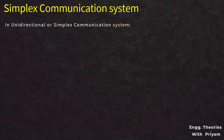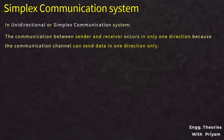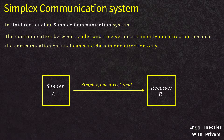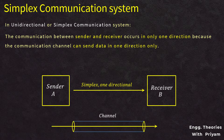In the simplex or unidirectional communication system, communication between the sender and receiver occurs only in one direction, because the communication channel can send data in one direction only — either from sender to receiver or receiver to sender. One person can only send data while the other can only receive. The other person can never reply to the sender, as the channel allows data transmission in one direction only.